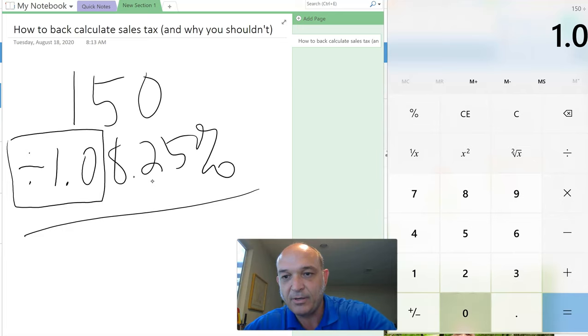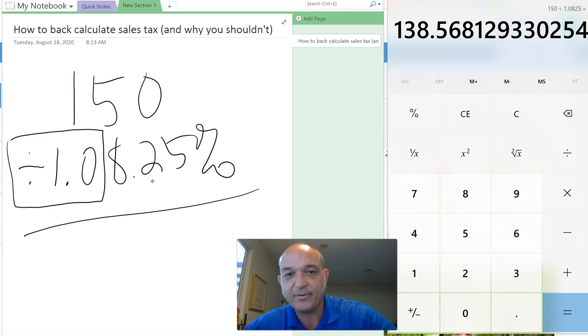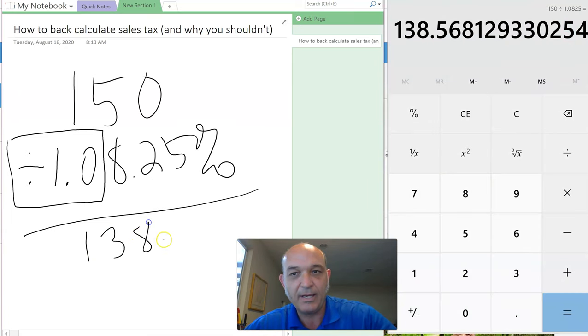$138.57. So you did not record a $150 sale, you recorded a $138.57 sale. That's what you do. Somebody gives you money, do a verbal agreement—this should not happen, and this is why I'm saying you shouldn't do this.